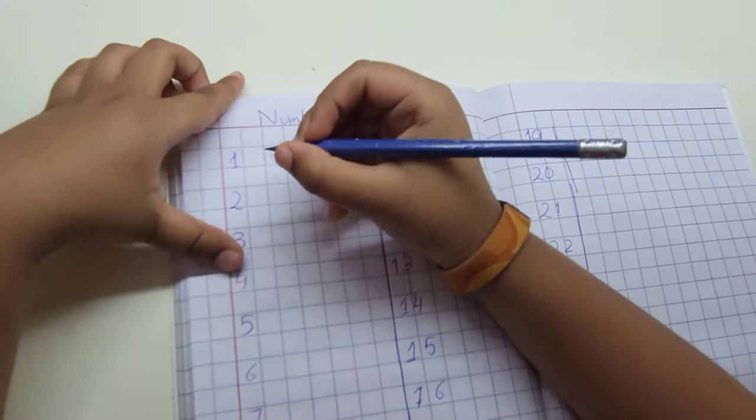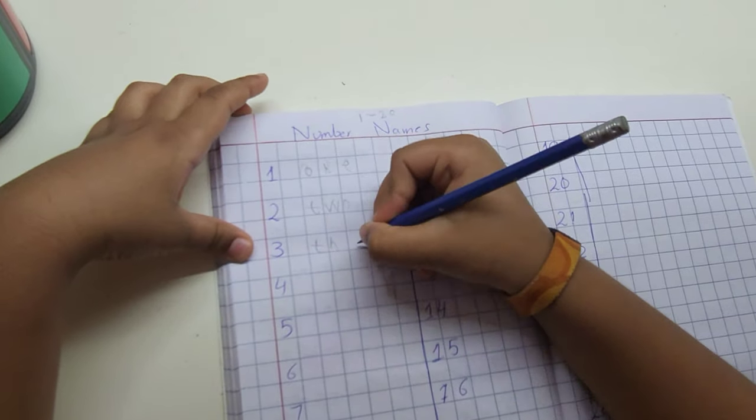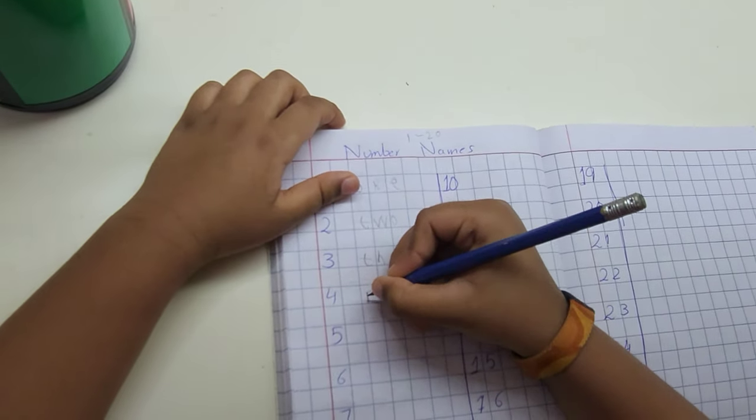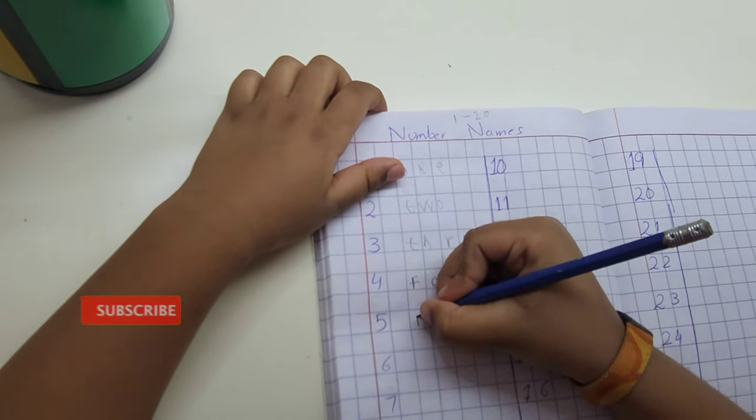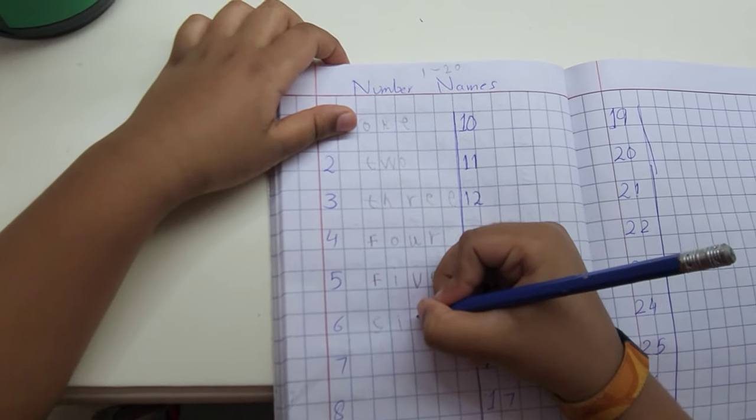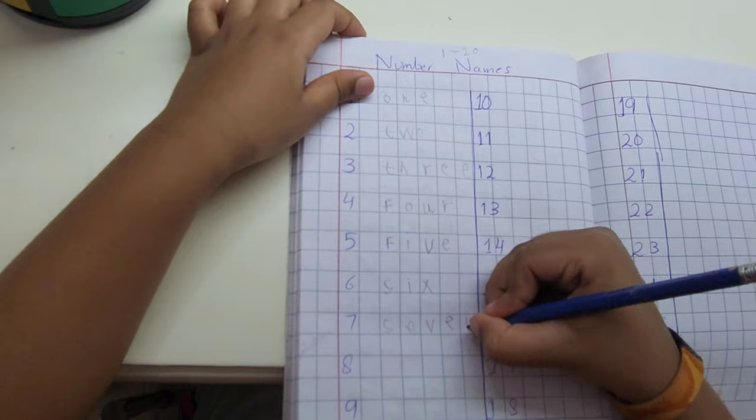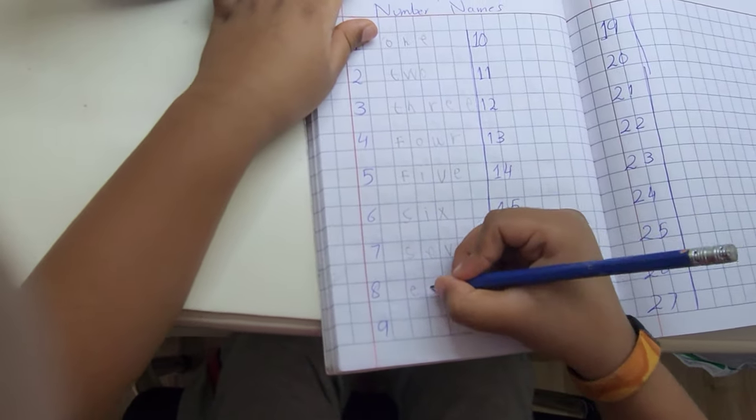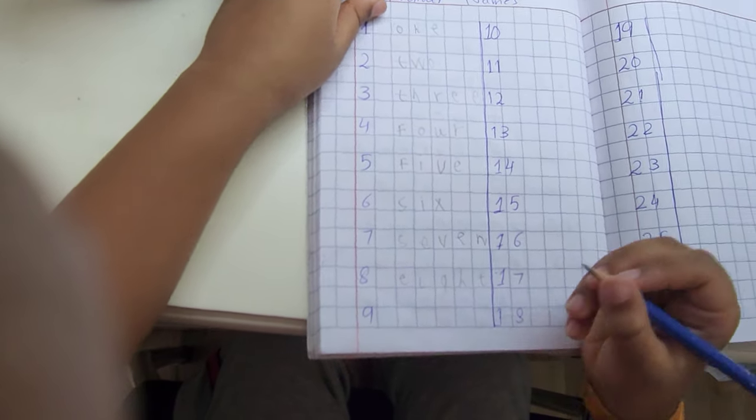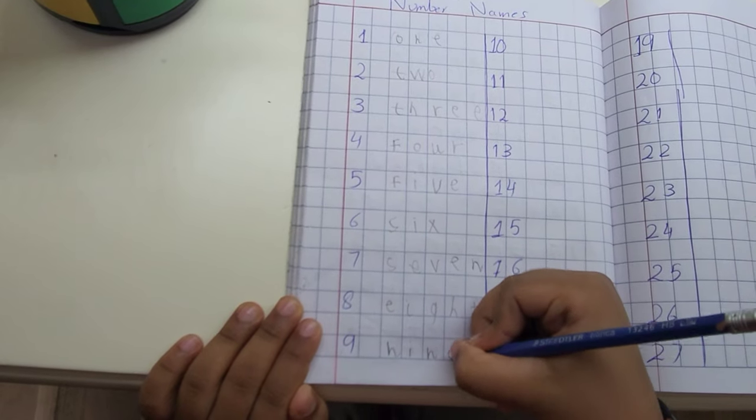O-N-E, 1. T-W-O, 2. T-H-R-E-E, 3. F-O-U-R, 4. F-I-V-E, 5. S-I-X, 6. S-E-V-E-N, 7. E-I-G-H-T, 8. N-I-N-E, 9.